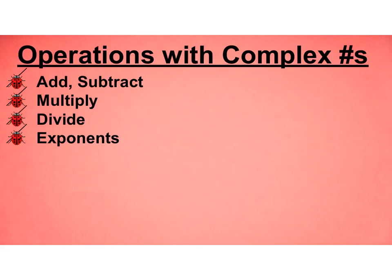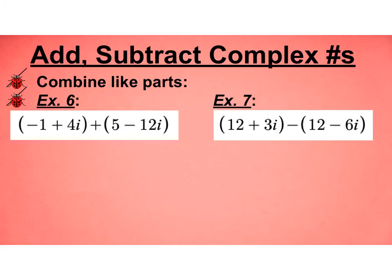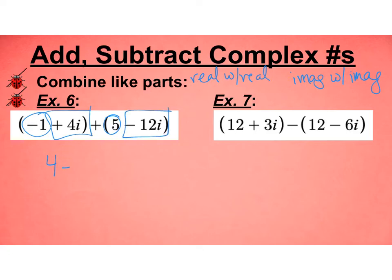Let's look at some operations with complex numbers. We'll look at add, subtract, multiply, divide, and our exponents. With adding and subtracting, just keep in mind we are combining like parts, and with this, this means real with real and imaginary with imaginary. So I have -1 added to 5, so I get 4, and I have 4i - 12i, so -8i, and we have just added those two complex numbers to get a new one.